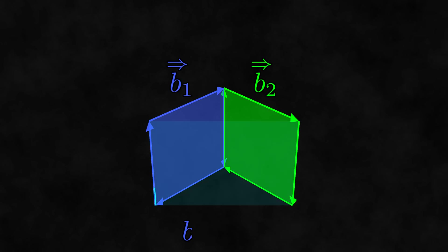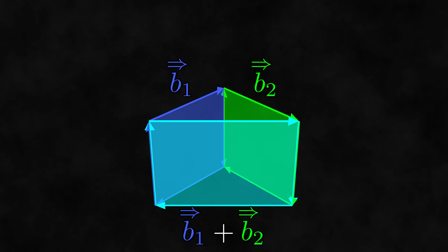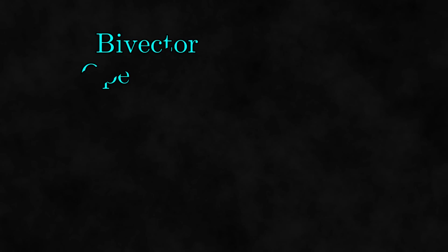In the last video, we looked at the operations we can do on bivectors. We came up with three operations: finding the magnitude, scaling, and adding.